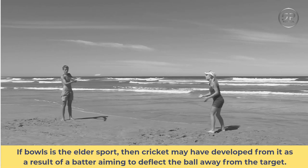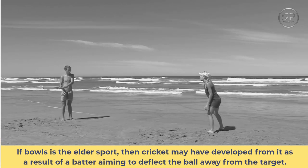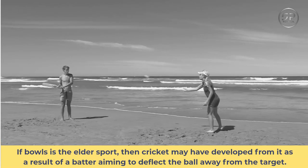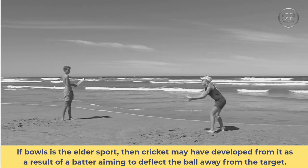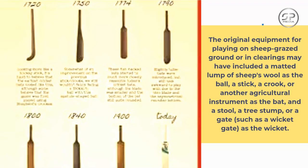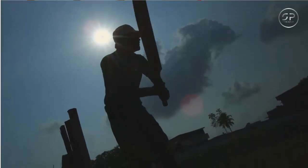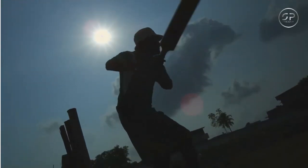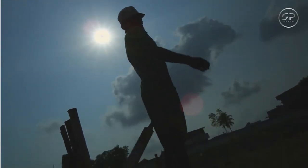If bowls is the elder sport, then cricket may have developed from it as a result of a batter aiming to deflect the ball away from the target. The original equipment for playing on sheep-grazed ground or in clearings may have included a matted lump of sheep's wool as the ball, a stick, a crook, or another agricultural instrument as the bat, and a stool, a tree stump, or a gate such as a wicket gate as the wicket.